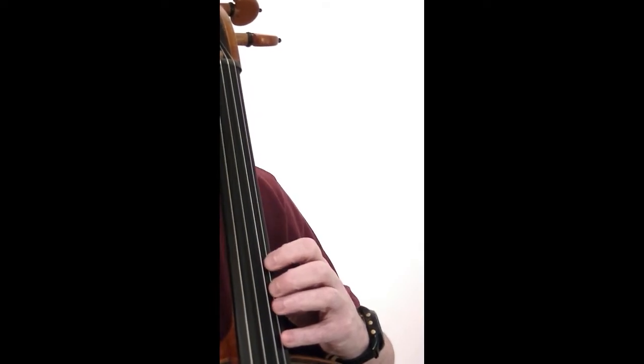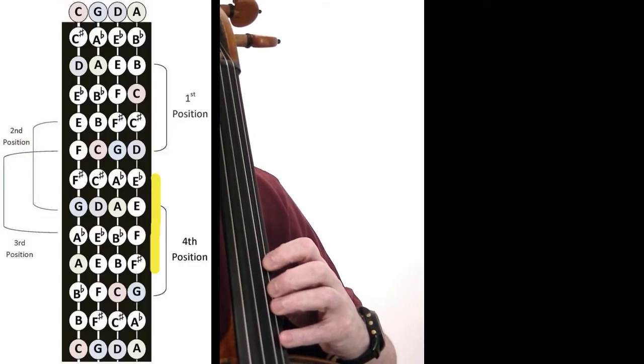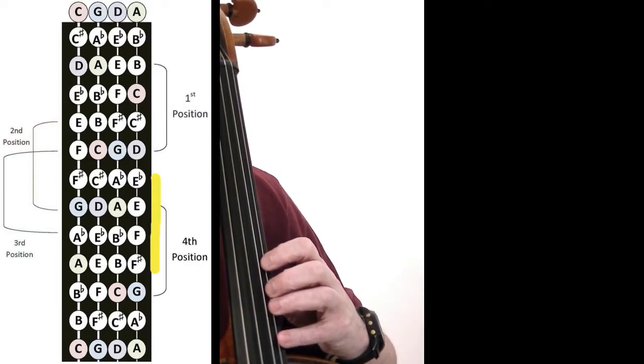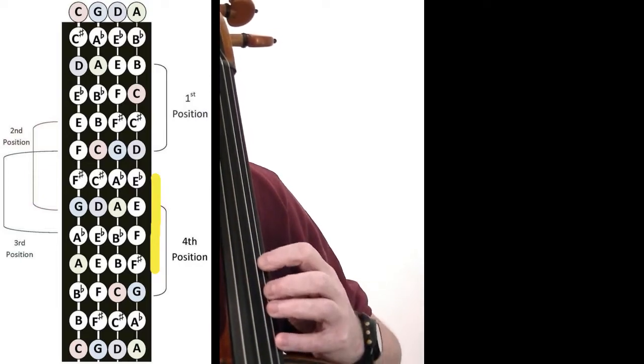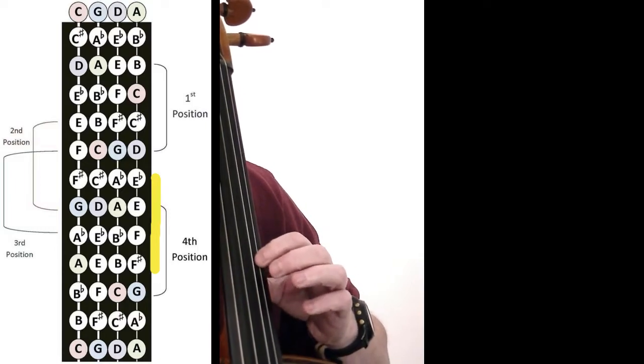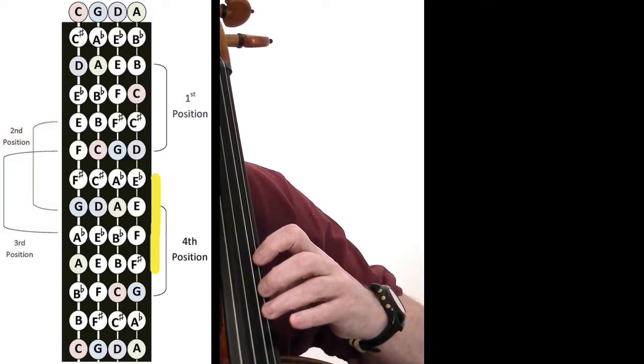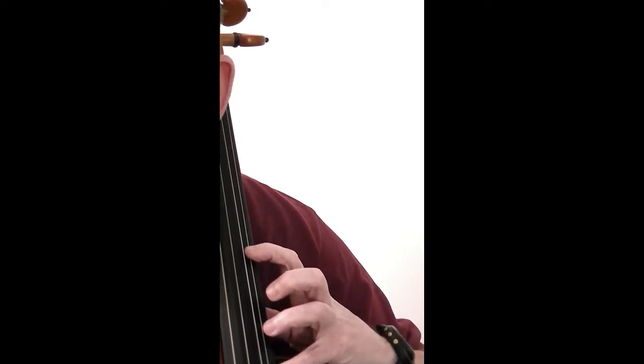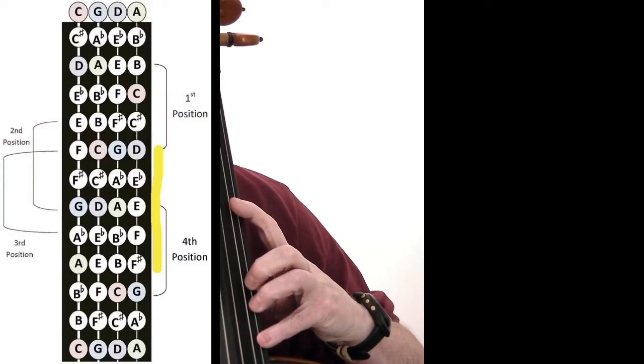And in a similar manner to how we dealt with the two second positions, I am now in high third position. Now my first finger is on E flat, my second finger is on E natural, third finger on F natural, fourth finger on F sharp. I can extend forward, I can extend backwards.